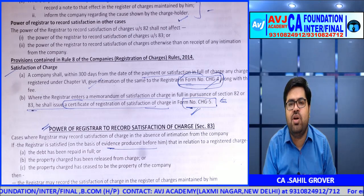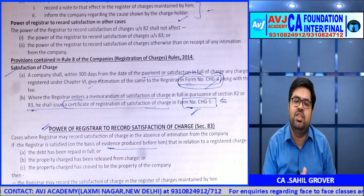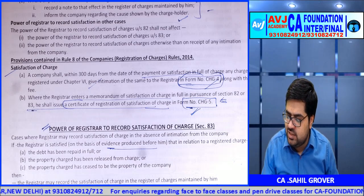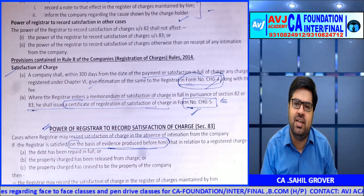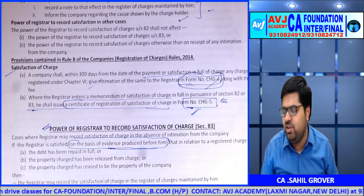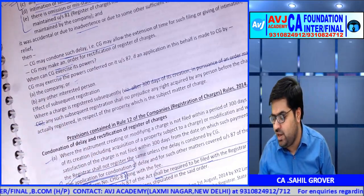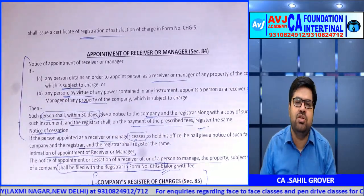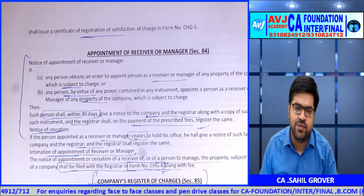Section 83: power of the Registrar to record satisfaction on its own. Even if the company has not intimated satisfaction under Section 82, the Registrar can record satisfaction based on any other evidence — for example, from a charge holder, third party, court proceedings, or liquidator. This is an additional power given to the Registrar beyond waiting for the company to inform.